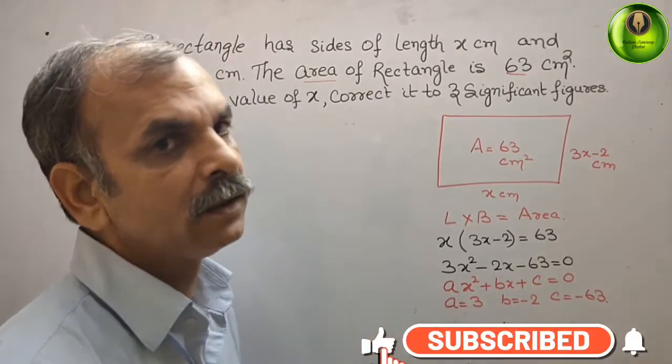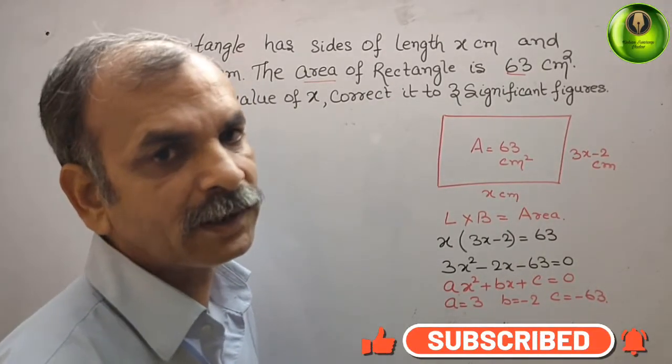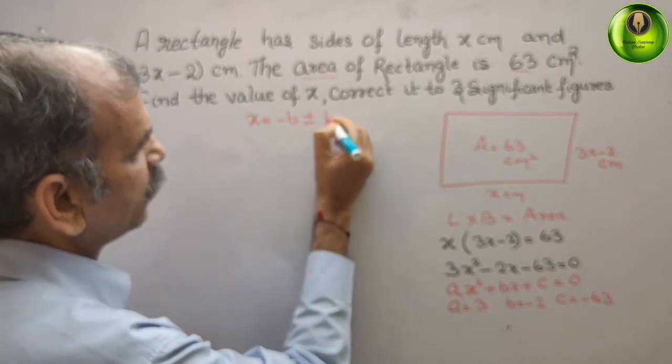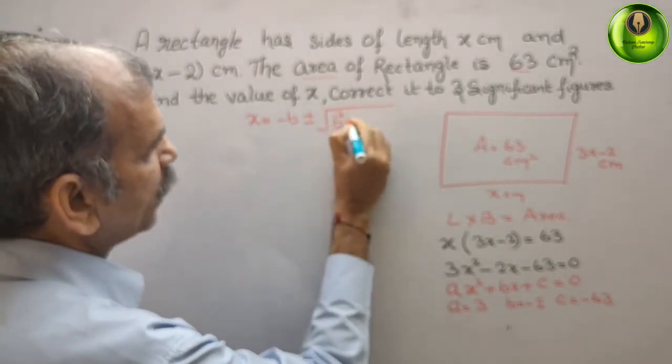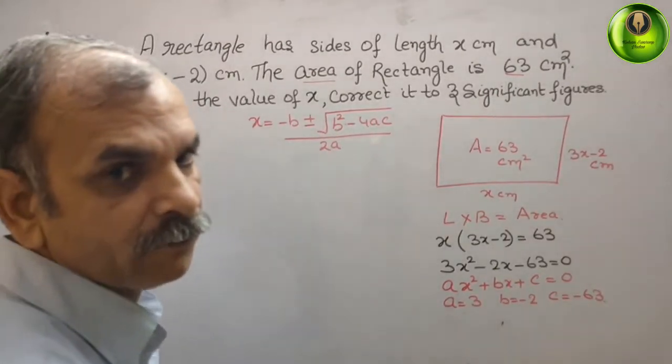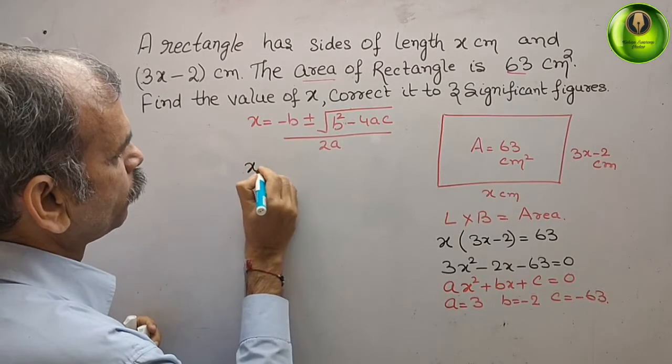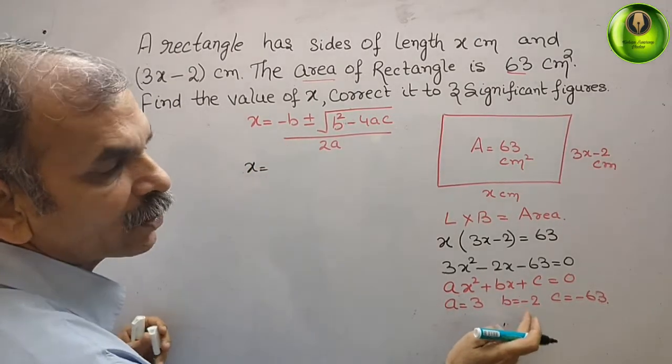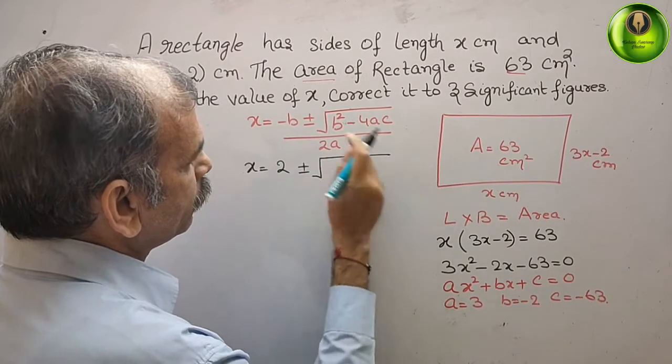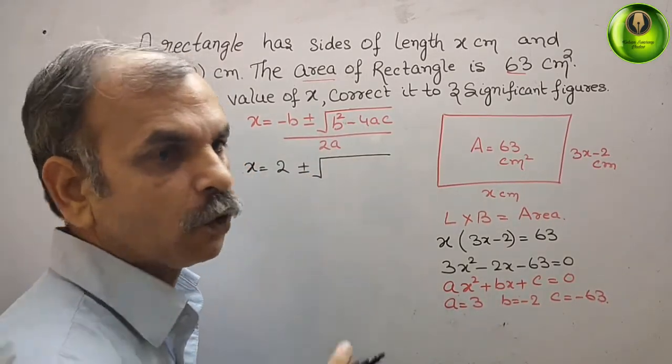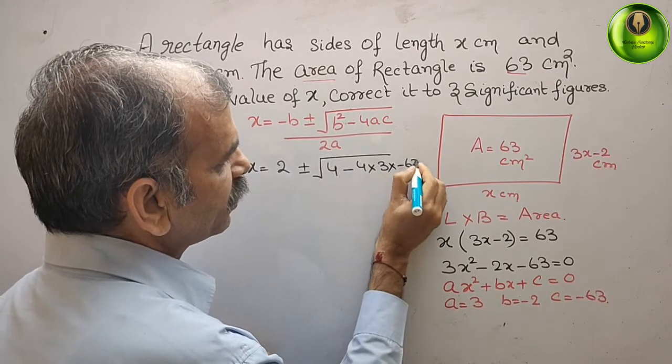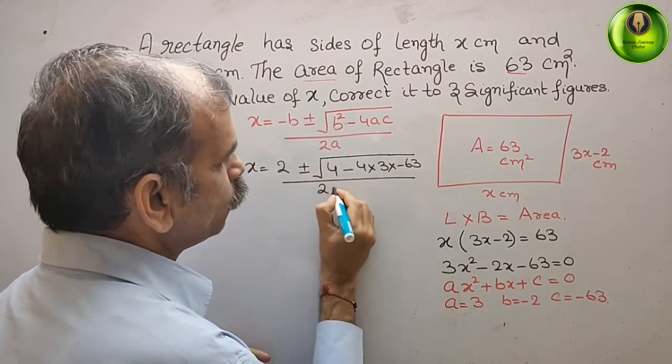Now, we will write our quadratic formula. What is that? That is your x is equal to minus B plus and minus root under B square minus 4AC by 2A. Now, substitute this value here. We get x is equal to minus B. That means minus of minus 2 is 2 plus minus root under B square. That means minus 2 square is 4. 4 minus 4 into A is 3, and C is minus 63, by 2A, 2 into 3.